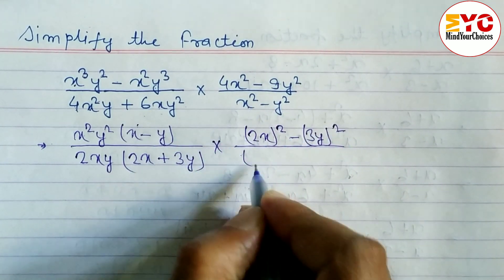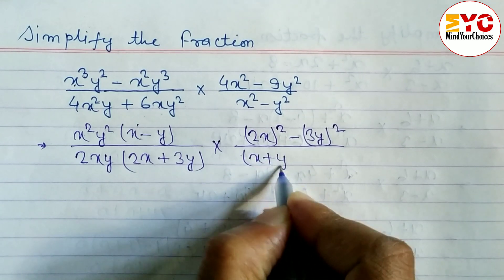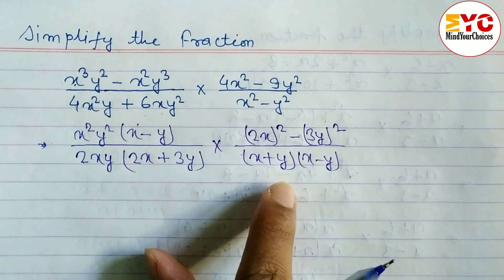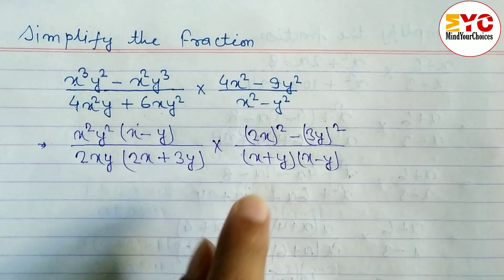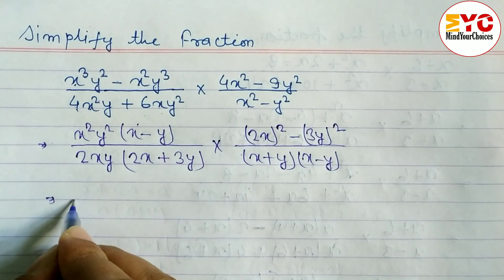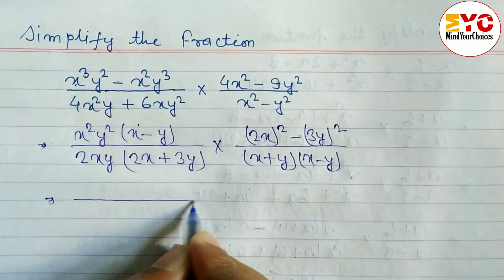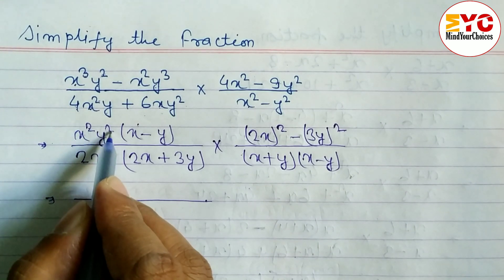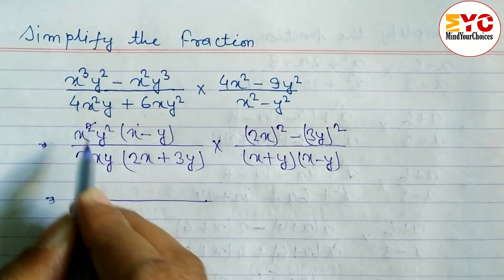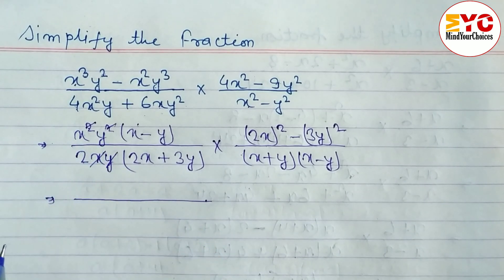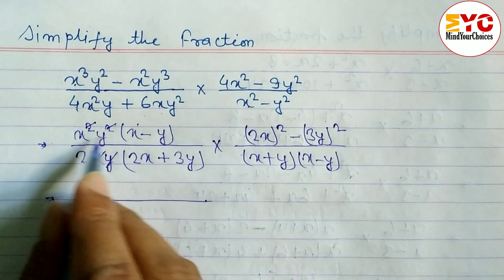In the denominator you can see it is already in the form of a square minus b square. So let's use the formula: a squared minus b squared equals (a plus b)(a minus b). If you don't know any formula, please visit my formula playlist — you will get each and every formula for every exercise. After this, x y and x square y square cancel out — x cancels, y cancels.